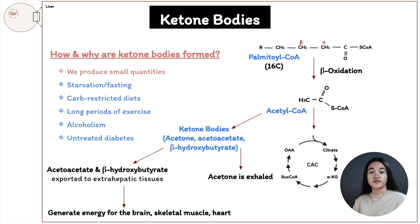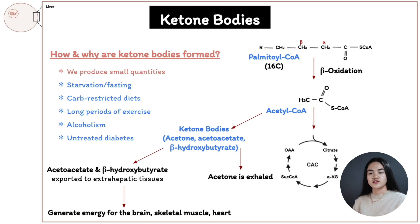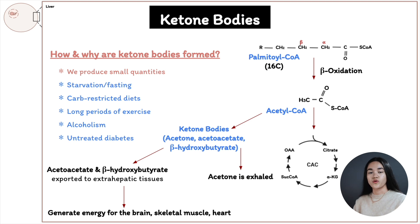So those are the three types of ketone bodies: acetoacetate, beta-hydroxybutyrate, and acetone. When glucose is not available, we need an alternate energy source. Ketone bodies become our main source of fuel because fatty acids can't cross the blood-brain barrier, so we need to produce energy, and the acetyl-CoA derived from fatty acid oxidation is turned into ketone bodies.